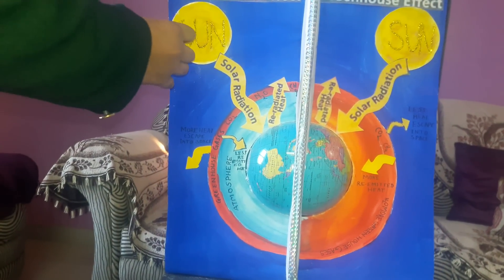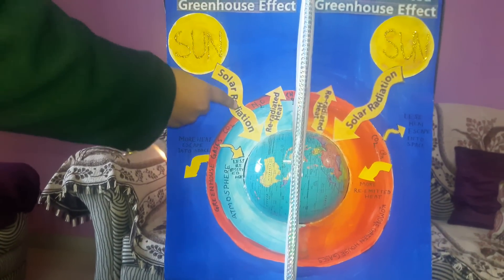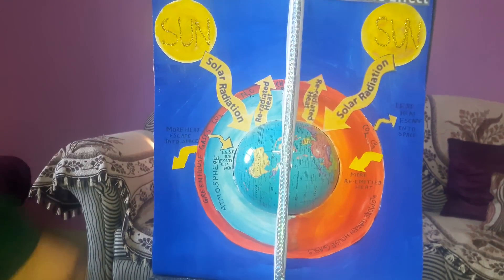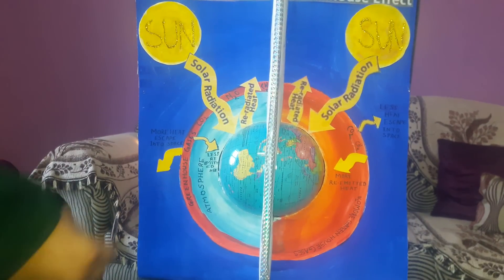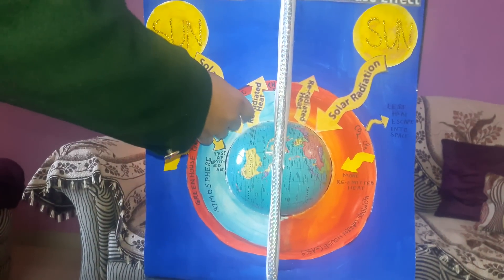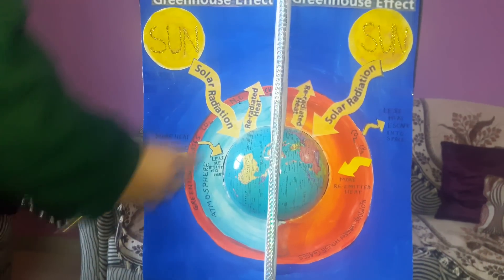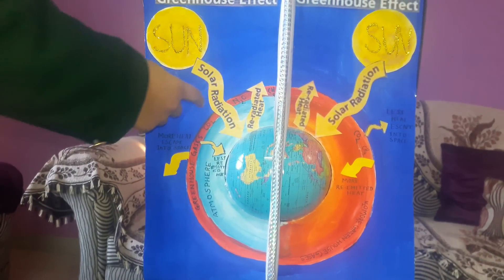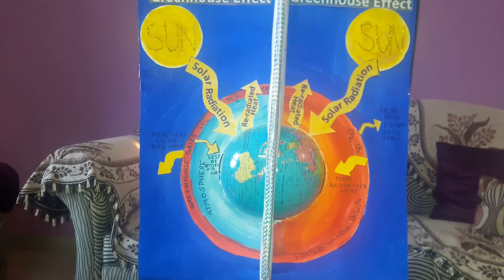Let me tell you in detail. The sun sends its solar radiation to the Earth. Some of it is absorbed by the Earth and the rest is reflected into space. The greenhouse gases capture the reflected heat and help to keep the Earth warm.